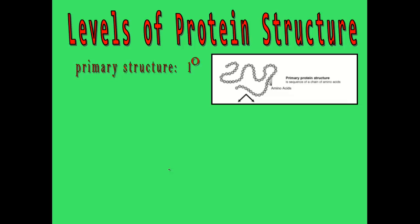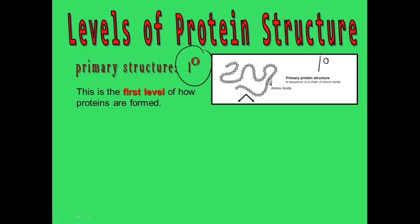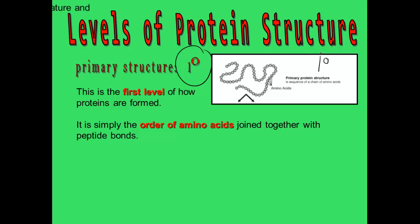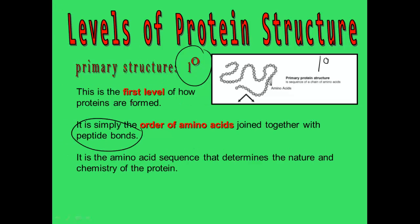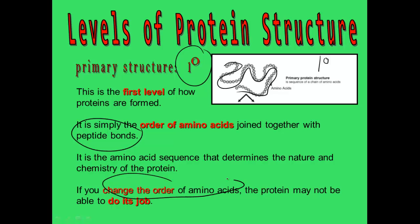There are four different levels of protein structure. The first level is called primary structure, represented by a 1°. Primary structure is just what gets produced by the ribosome — a chain of amino acids held together with peptide bonds, simply a straight line of amino acids strung together. If you change the order of these amino acids, that will impact the protein's ability to do its job properly.